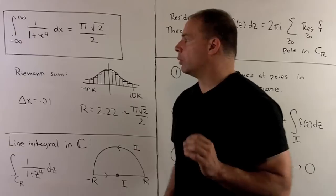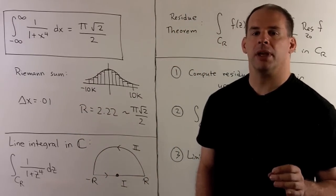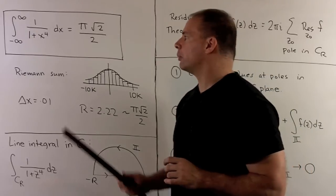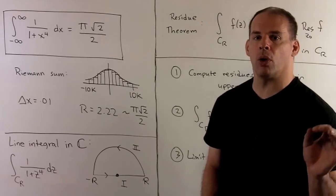Using the residue theorem, we want to show the improper integral from minus infinity to infinity of 1 over 1 plus x to the 4th with respect to x is equal to pi times square root of 2 over 2.